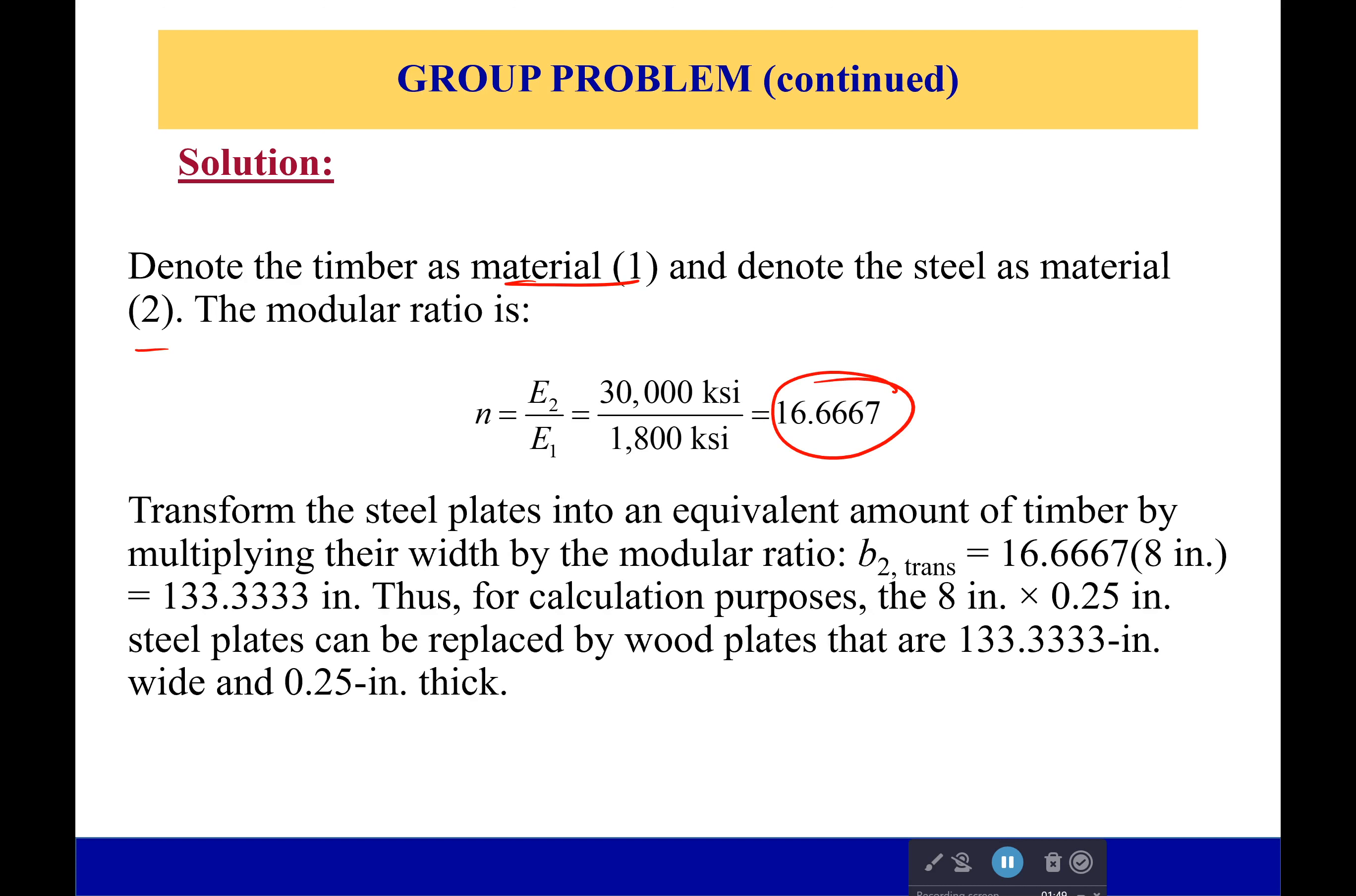And so we're going to transform those steel plates into an equivalent amount of timber. And the way we're going to do that is by multiplying their width by the modular ratio. So these are going to be some massively, massively wide little things. This is just insane. Definitely a reasonable beam to build. But we don't have to worry about it being reasonable to build. We can just calculate things, do some interesting math with it.